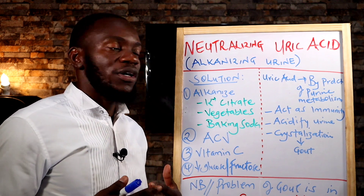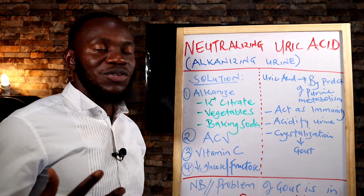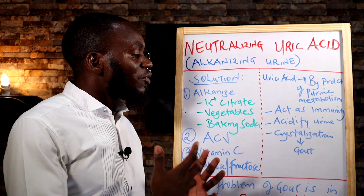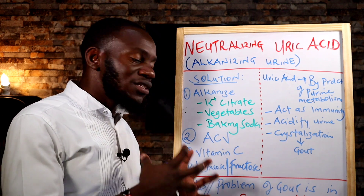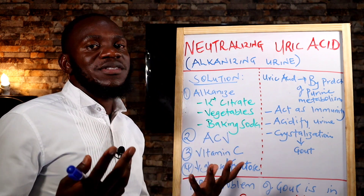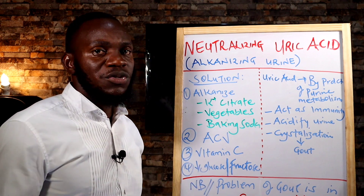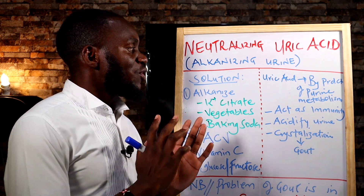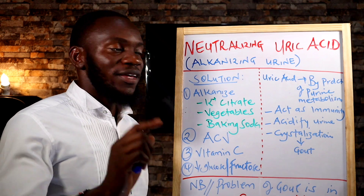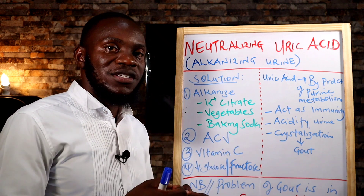You cannot call uric acid a purely bad thing just because you've gotten gout. It plays a very important role as a stabilizer of the acidic environment in the stomach and as an immune system booster. The acidity of urine is the real problem. Your body produces 85 percent or more of its uric acid internally — only 15 to 20 percent comes from diet. So even if you stop eating red meat and organ meat, you will not recover from gout.